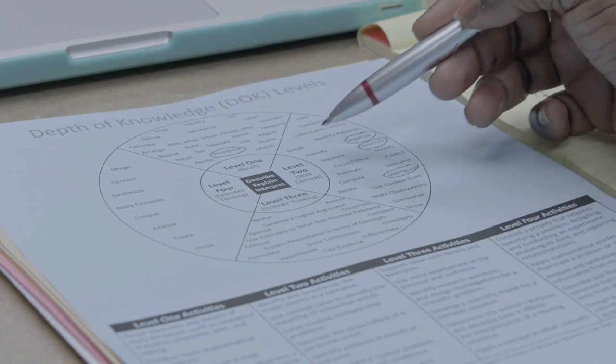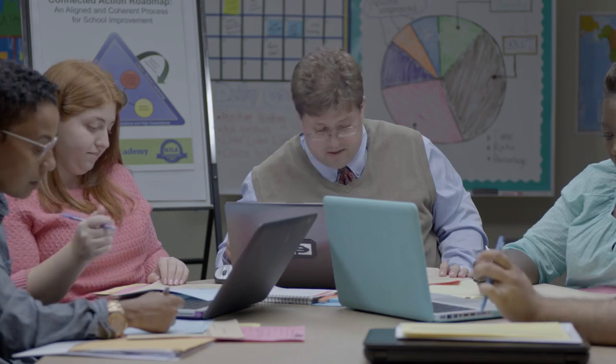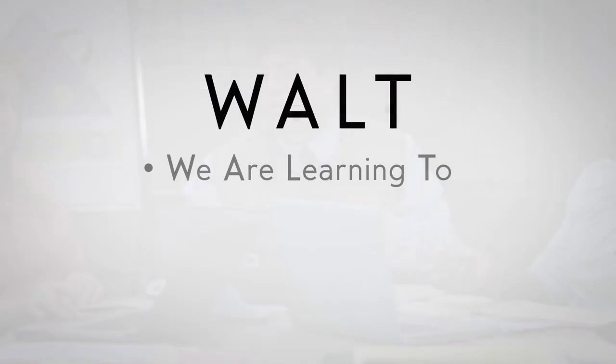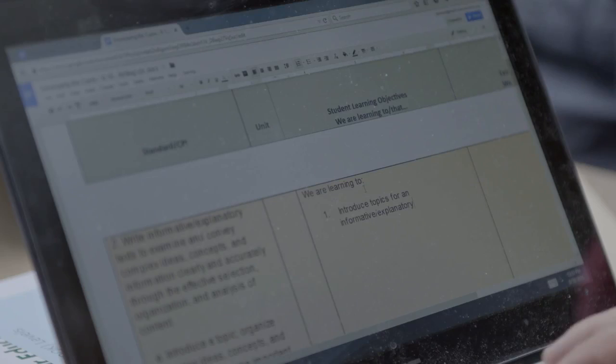The group determines that 'make important connections and distinctions' is levels two and three, with 'connect' at level four and 'construct' at level three, placing that cluster at levels three and four. To write student learning objectives, they use the WALT format — 'We Are Learning To' or 'We Are Learning That' — from the student's point of view. Each verb generates a separate WALT. For example: 'We are learning to introduce topics for an informational/explanatory text.'